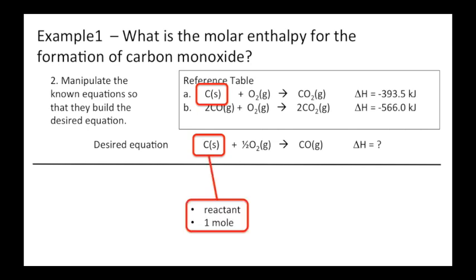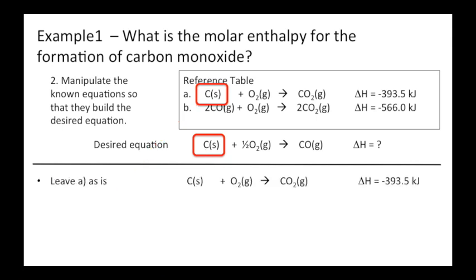Reactant one mole, reactant one mole. We have a match. I have one mole as a reactant, I have one mole as a reactant. So I don't have to manipulate it. I can leave A as is. So I just copy down equation A exactly as I see it. And now I can check off carbon. Carbon is done.